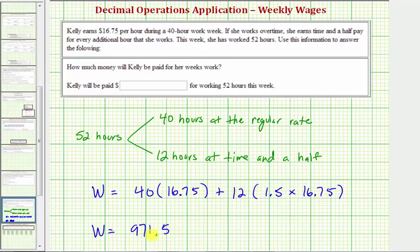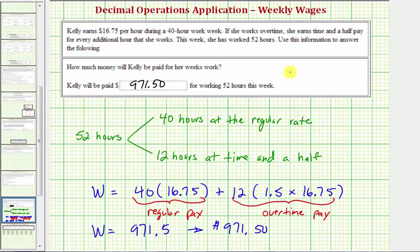So W equals 971.5, which means she made $971.50 this week. This product represents her regular pay, and this product represents her overtime pay. Kelly will be paid $971.50 for working 52 hours this week.